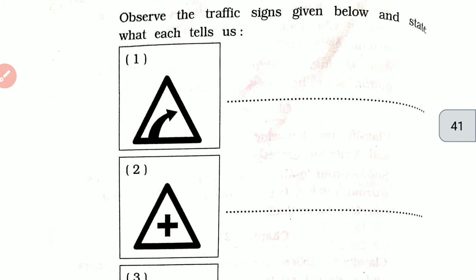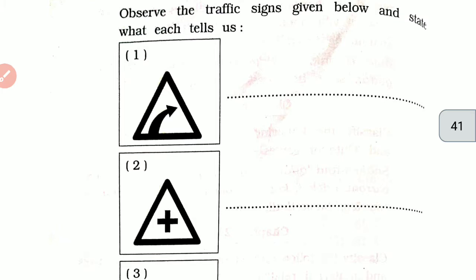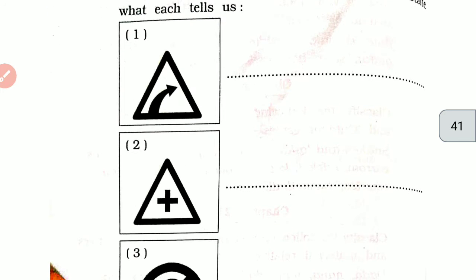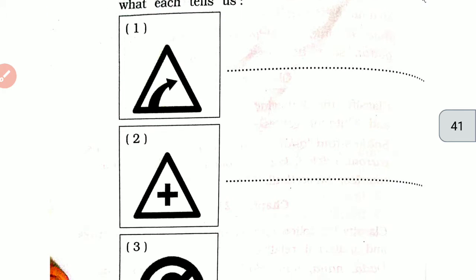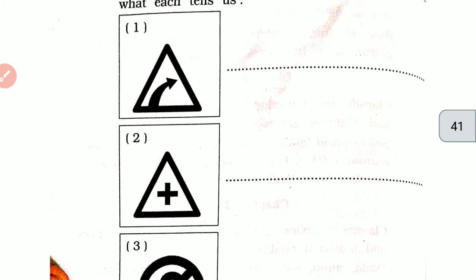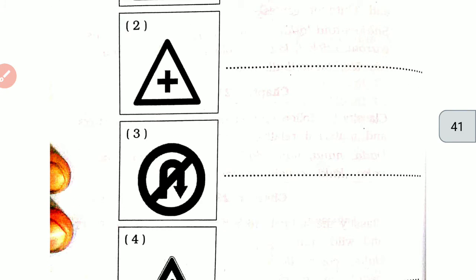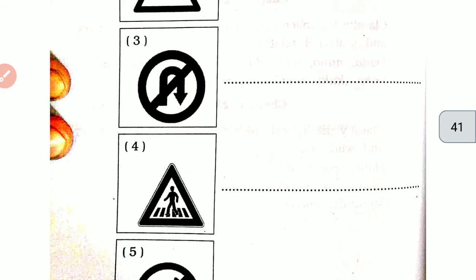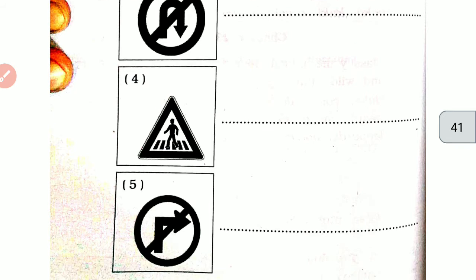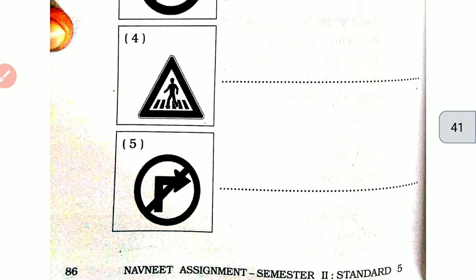Observe the traffic signals given below and state what it tells us. One: right turn. Second: hospital ahead. Third: no U-turn. Fourth: zebra crossing. Fifth: no right turn.